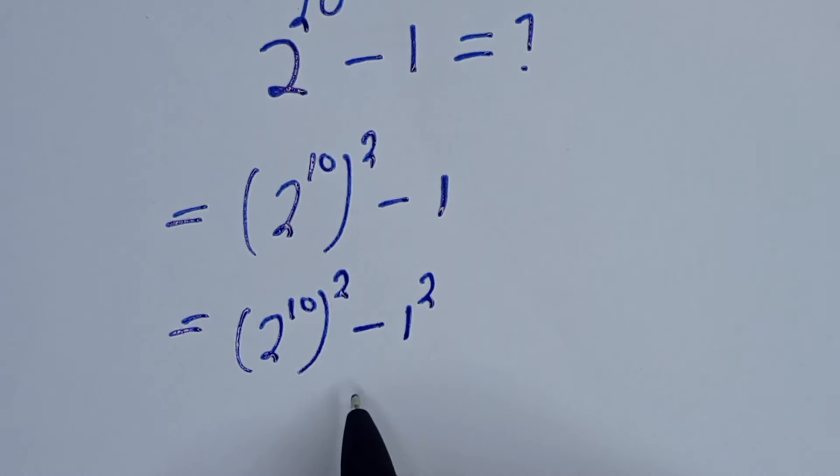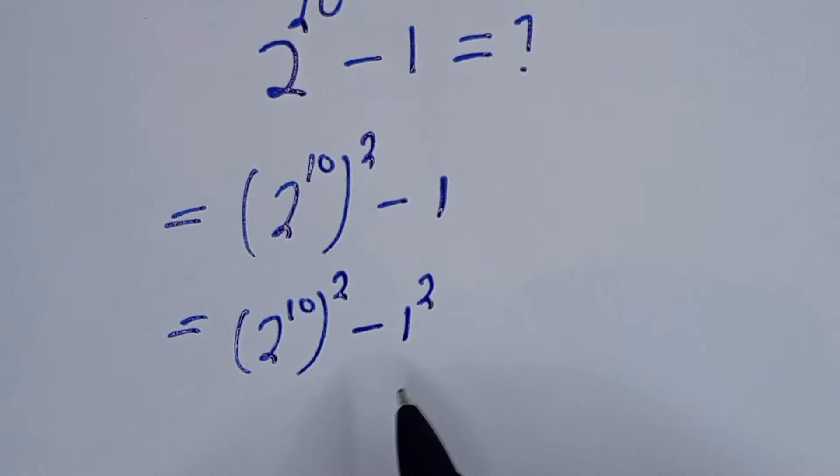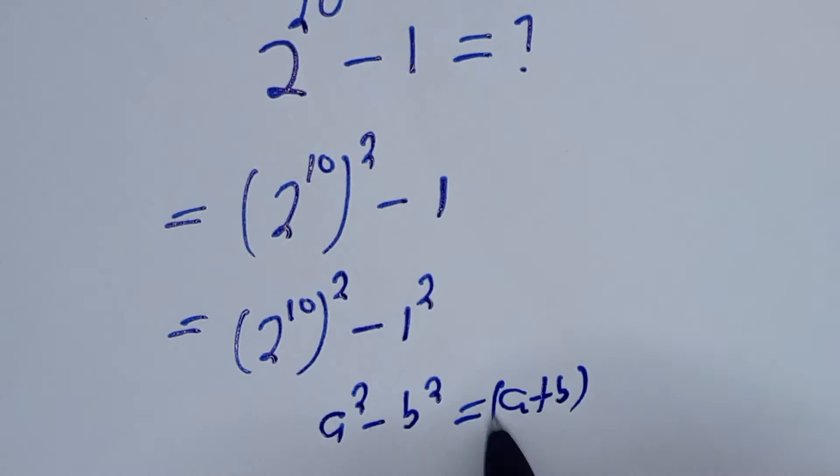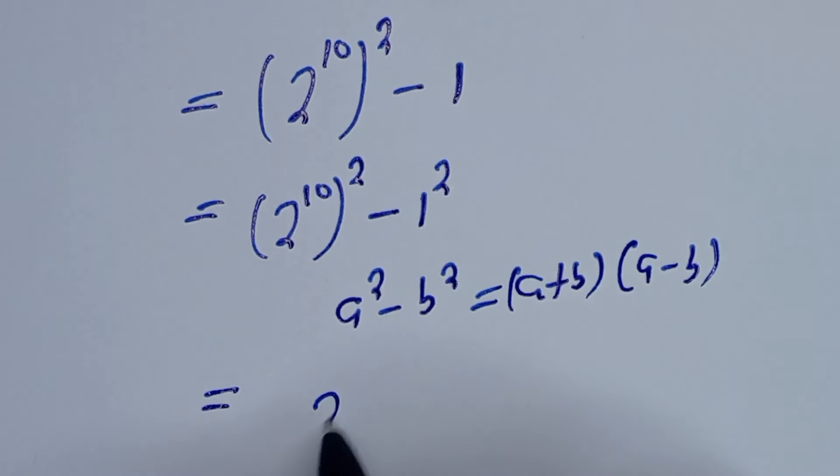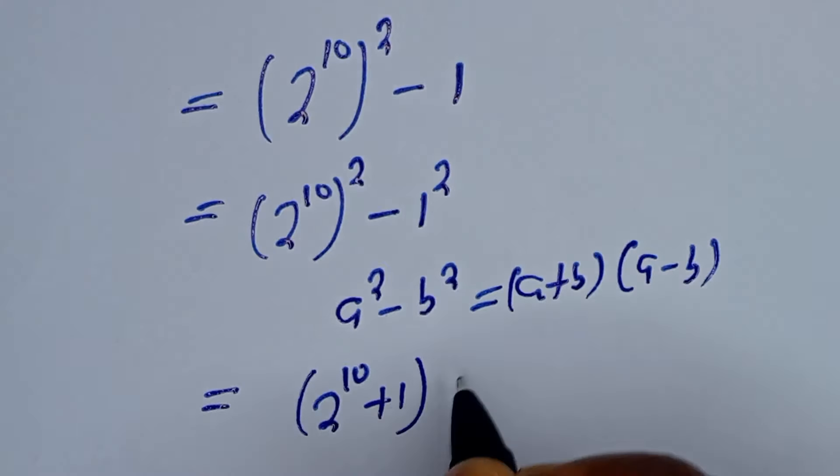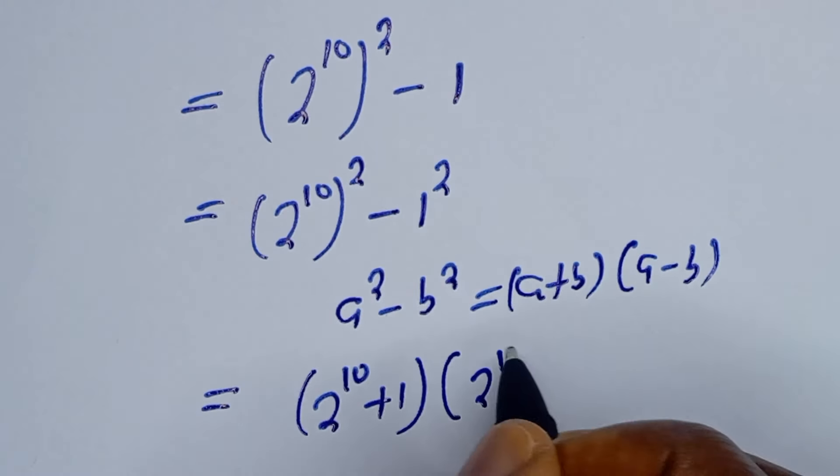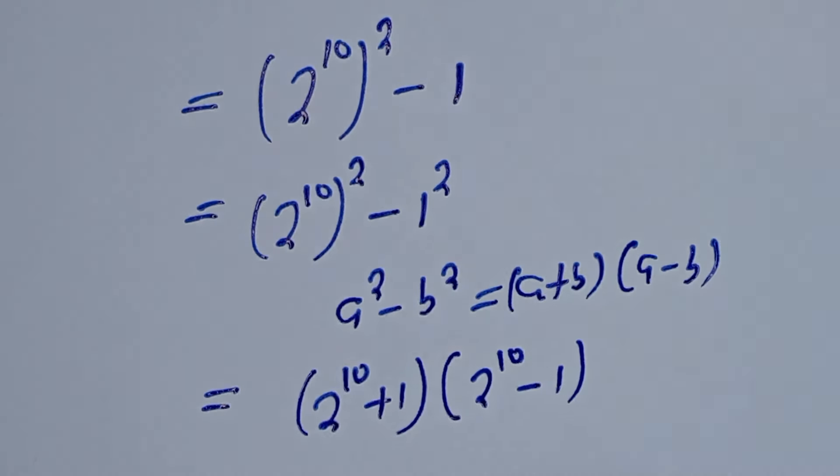Now, this is in the form of perfect square. Take note of this: if you have a squared minus b squared, this is equal to a plus b times a minus b. Equal to, we have 2 to the power of 10 plus 1 times 2 to the power of 10 minus 1.